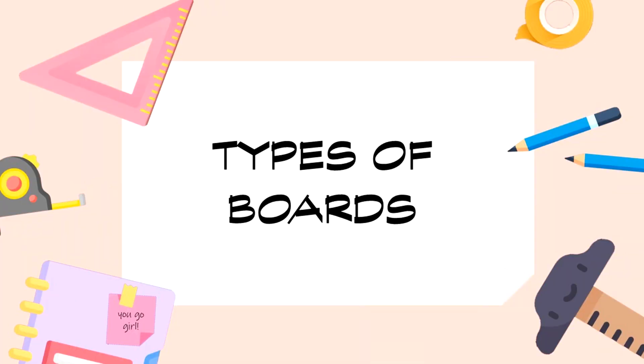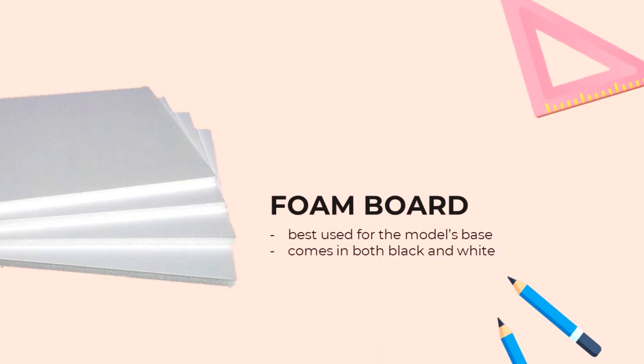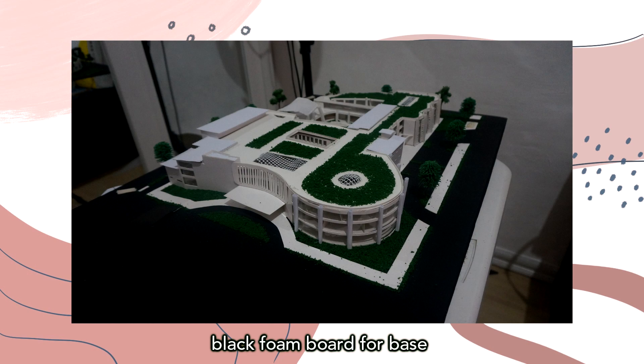Now let's move on to the types of boards. Boards are usually what you use for scale models, and there are a lot of types — something I discovered in Arki. First, we have the foam board. It's a board made of styrofoam. I don't recommend using it for walls because when you cut it, it has a tendency to get really messy — the styrofoam just deteriorates. But I do like using it for the base since it's already kind of thick. It comes in both black and white. I like using the black one because it makes your model, which is usually white, stand out more due to the contrast.